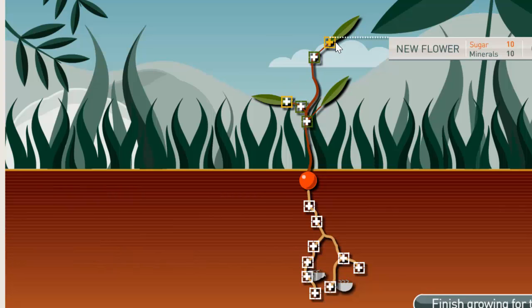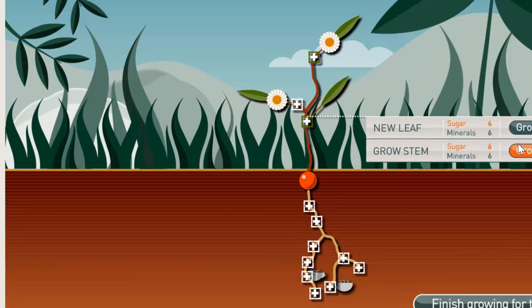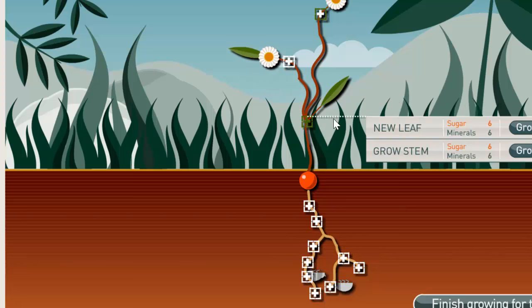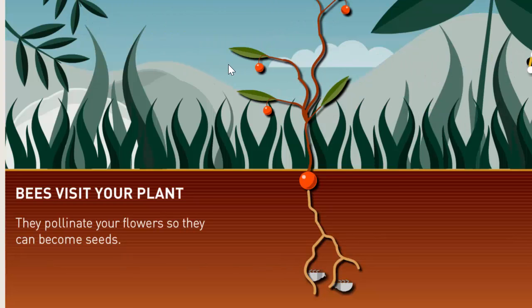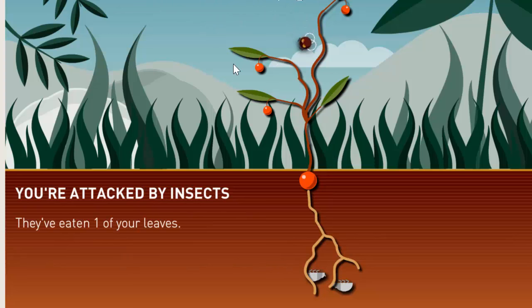It says don't grow too many stems. Save your resources for roots and leaves. And we're going to follow that advice. But we're also going to make a little bit of both stems and leaves. We're going to make a little bit of leaves. And can I actually make another leaf here? Yes, I can. And can I make another one here? Yes, I can. Yes, excellent. Perfect. And another flower. There we go. Three flowers. Lots and lots of stuff going on. And now we'll be getting three different seeds that we can release.